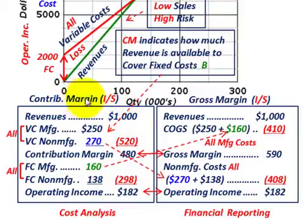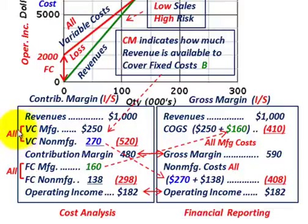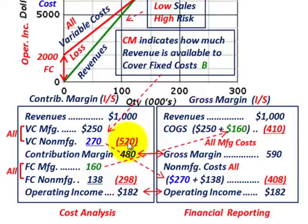For our contribution margin, we start with revenues of $1,000 — looking at this in terms of a manufacturing company. To get down to the contribution margin, we subtract all variable costs: variable costs for manufacturing the product and variable costs for the non-manufacturing portion. Totaling those together gives a total variable cost of $520, which we subtract from revenues. The difference gives a contribution margin of $480.